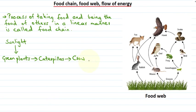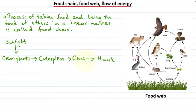This is a food chain. Crow becomes the food of hawk. In this food chain, the energy was trapped by green plants and converted from solar energy into chemical energy. The chemical energy in the plant tissue got transferred to the caterpillars, then from caterpillars to the crow, in a linear manner. This is called a food chain.